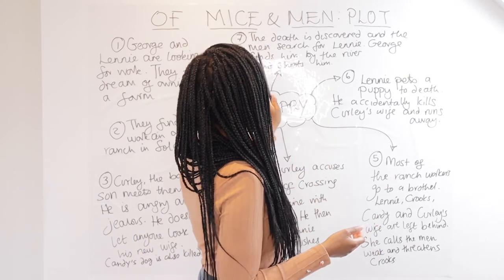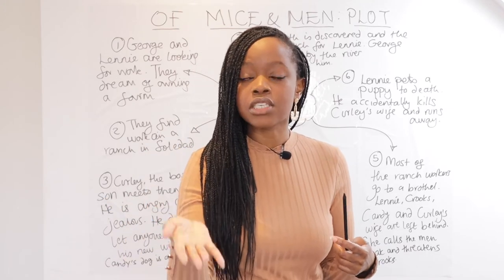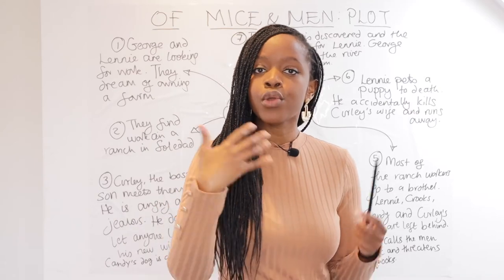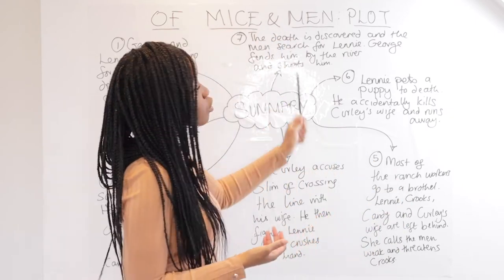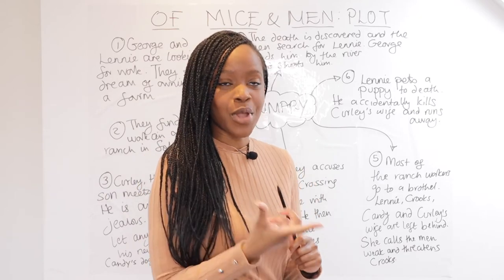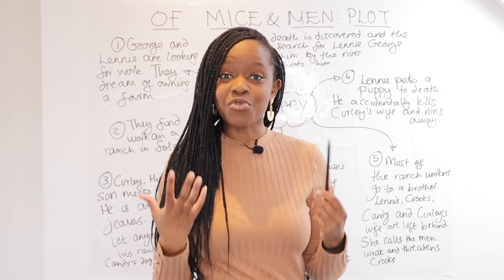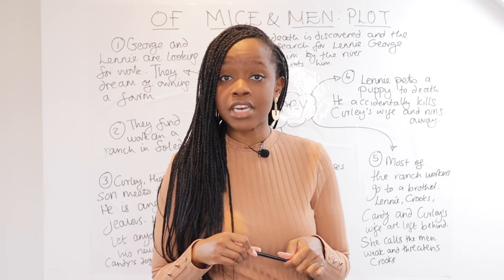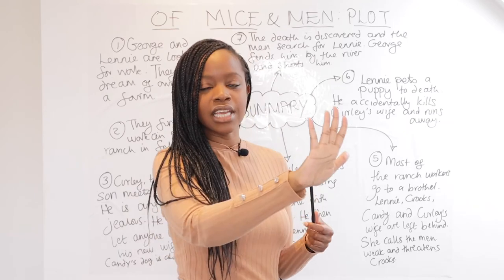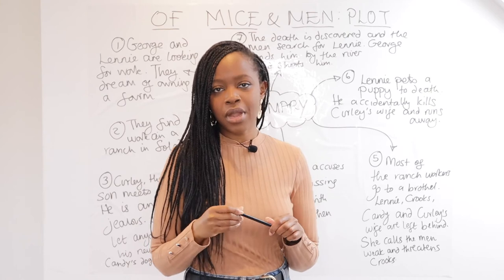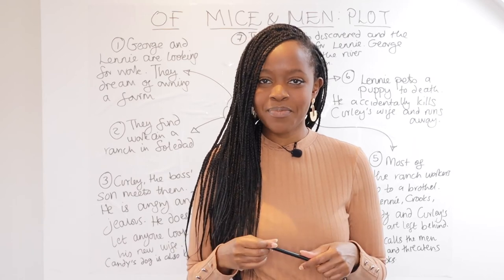It is Candy who first discovers Curly's wife's dead body. He then informs George, who lets all the other men know. Curly is in a massive rage and the men go out with shotguns to search for Lennie and kill him. George finds Lennie first because he remembered their agreed meeting spot. As George articulates their dream of owning a ranch and Lennie gazes out onto the river, George shoots him in the back of the head — ultimately as an act of mercy and self-preservation.